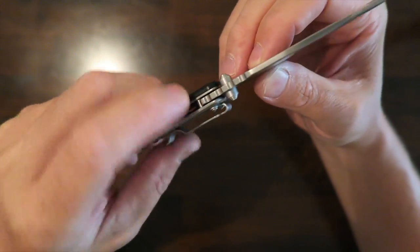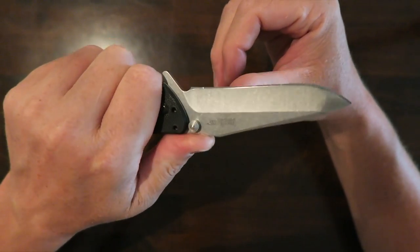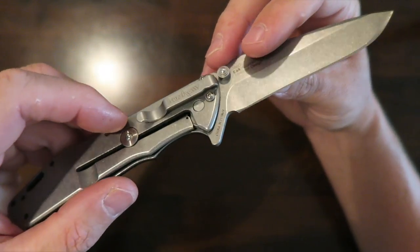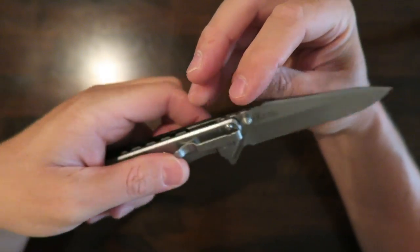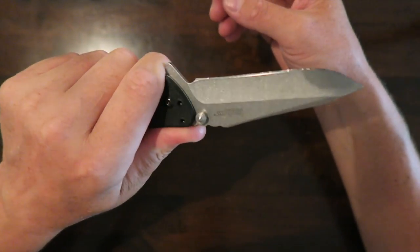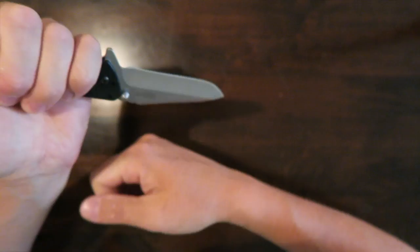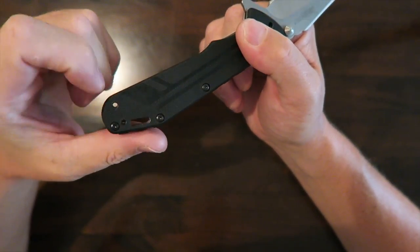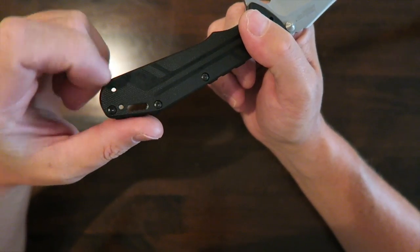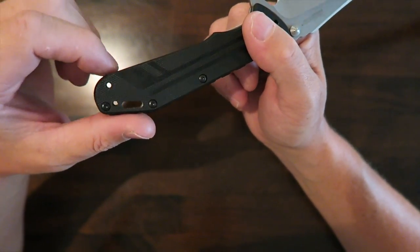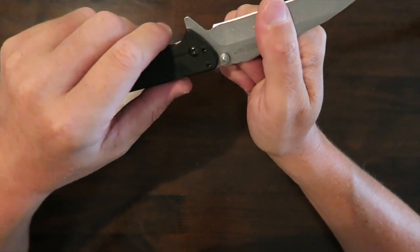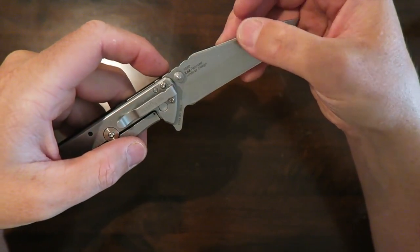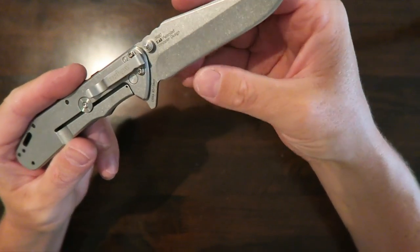Very easy to close and open. There's a little bit of jimping on the top there. Pretty perfect amount. The flipper also performs well as a finger guard so that your knife doesn't slip out of your hand no matter which way you're holding it. Very large lanyard hole which I like. I kind of like that rectangular lanyard hole that they've done on some of their knives makes it very easy to put a lanyard through there.